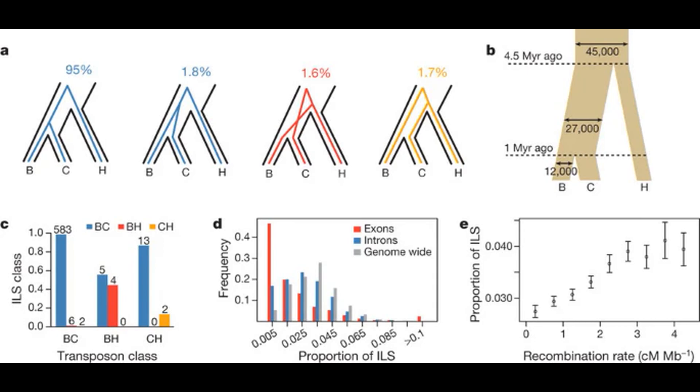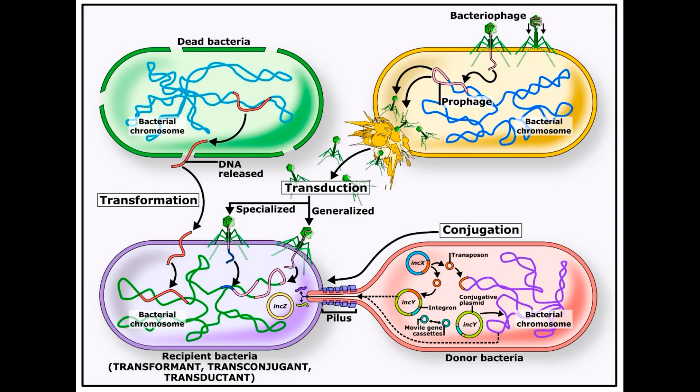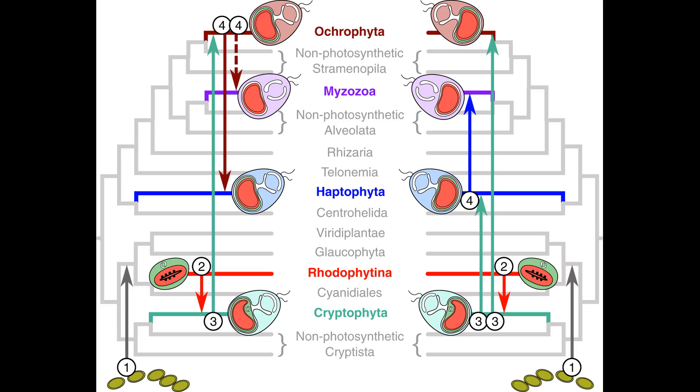We recently did a video on horizontal gene transfer, which included examples of genes switching between different bacterial phyla, bacteria and plants, fungi and aphids, and parasitoid wasps and caterpillars. Or see our video, Passing Chloroplasts, which discusses the transmission of chloroplasts from red algae to various protozoan lineages.